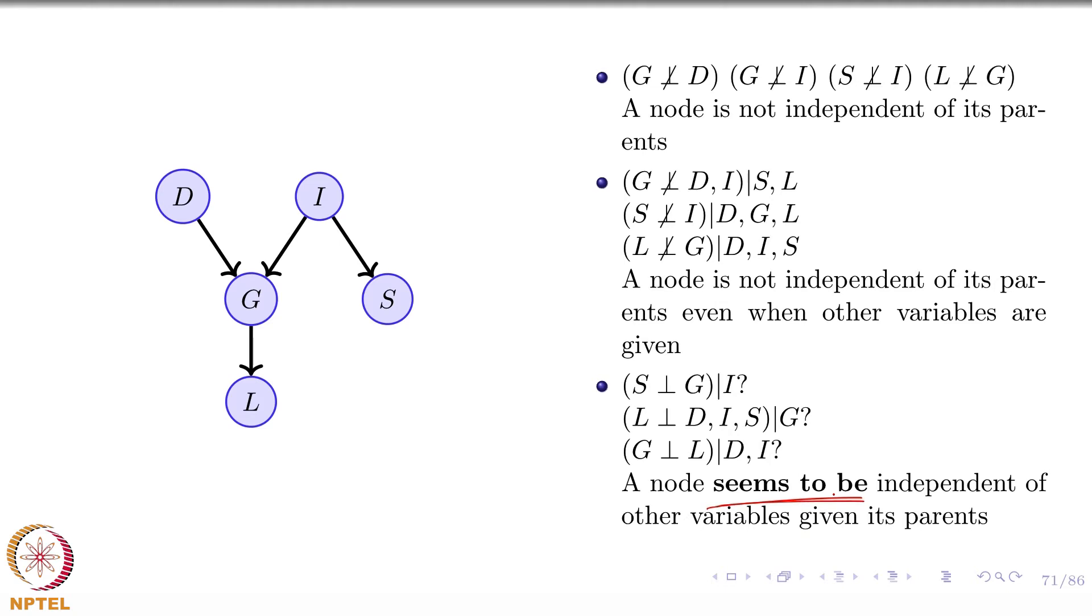Based on the discussion we saw in the previous module, this is the rule that we will come up with: a node seems to be independent of other variables as long as I know its parents' value. It's independent of everything else in the network. That's what we saw in the previous module.